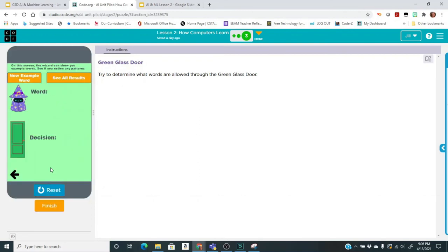I'm going to start playing. You're going to see first, you're going to click on new example word and you're going to see what happens. So the word shows up. It says that it was accepted and you click on another one and you're going to find some that are accepted and some that aren't.